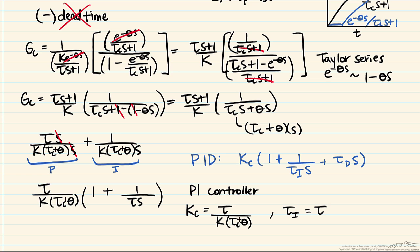τc can be determined by a number of correlations that have been developed, most of which are a function of the G transfer function — in this case the first-order plus dead time parameters. The important takeaway is that if you have a physically unrealizable controller using controller synthesis, the way to fix it is to alter your desired response to make it more reasonable and consistent with the process transfer function, sensor transmitter, and valve. That is what we demonstrated in this screencast.